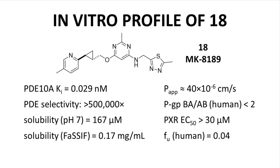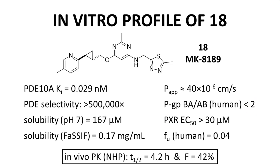Here is a summary of the in vitro activity of compound 18, also now known as MK8189. In the bottom left we have solubility in fasted state simulated intestinal fluid, FASSIF. The apparent permeability is 40 × 10⁻⁶ cm/s, a very high value. The efflux ratio is not one, but not overly high. The PXR EC50 indicates very weak expected activation of elevated cytochrome expression. In vivo PK data in non-human primates shows a half-life reasonable for a once-a-day oral drug, and bioavailability is okay.